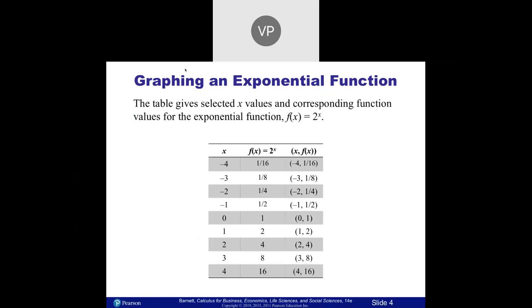In this function, there's a table where they plug in different values for f(x) = 2^x. Starting with zero: 2 to the zero — anything to the zero power equals 1. So that's where we get the coordinate (0, 1). The trick on all of these is you want to plug in points and get a feel for where these are.